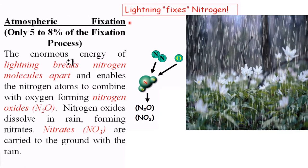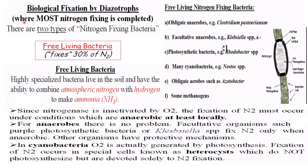In the case of atmospheric nitrogen fixation, lightning helps in fixing the nitrogen — only five to eight percent of fixation takes place here. The enormous energy of lightning breaks the nitrogen molecule apart and enables the nitrogen atoms to combine with oxygen, forming nitrogen oxides. These nitrogen oxides dissolve in rain forming nitrates, and these nitrates are carried to the ground with the rainwater.